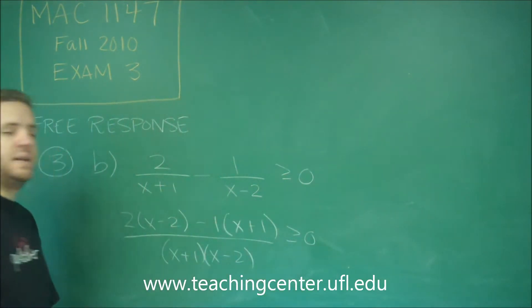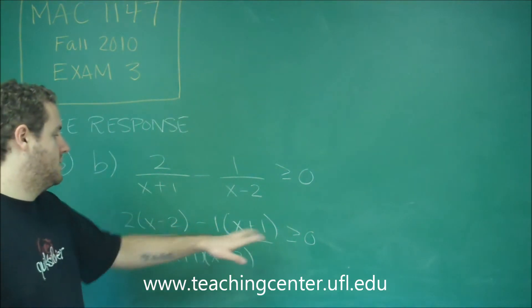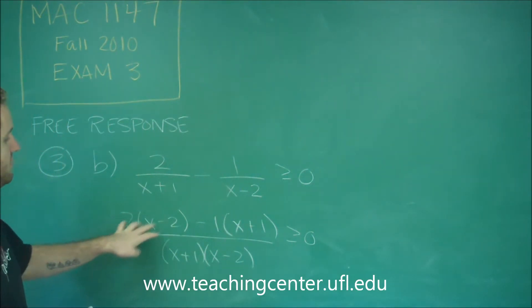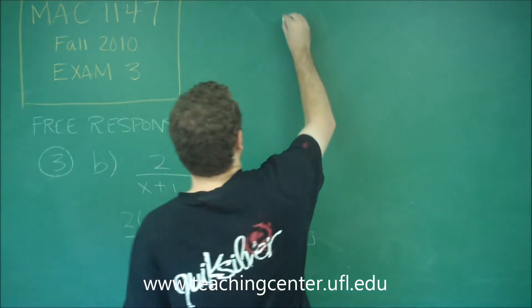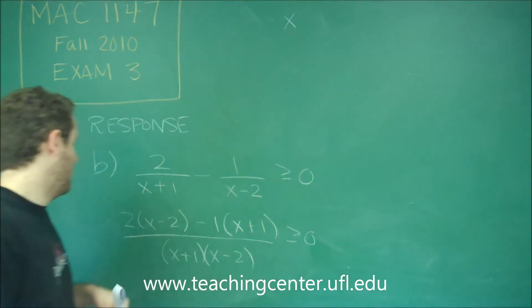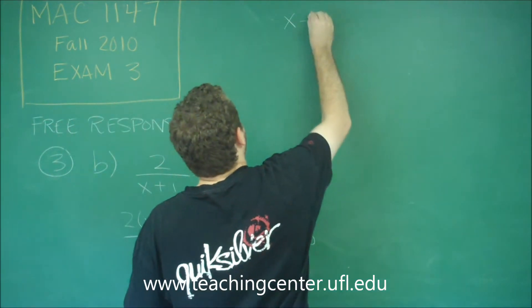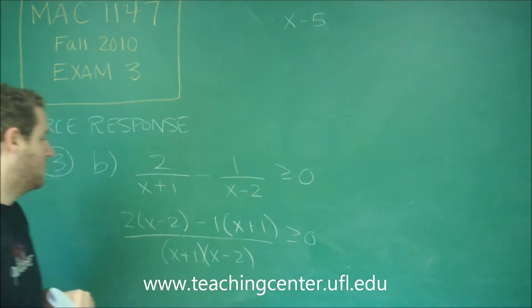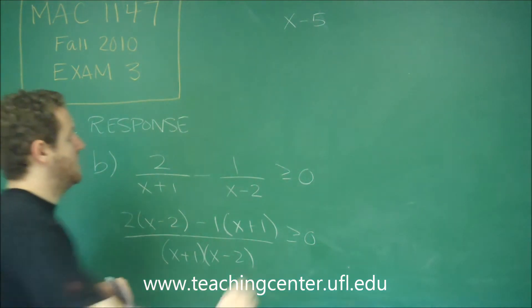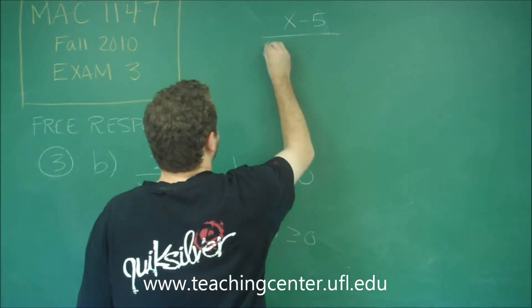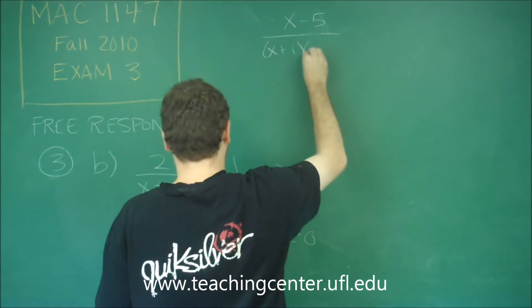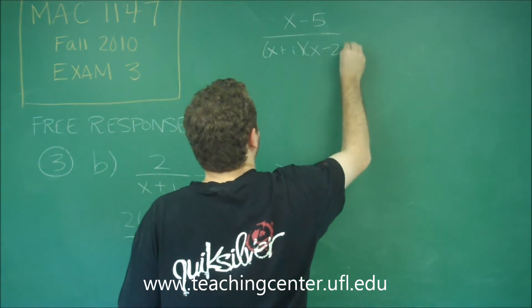So there is one more step that needs to be done before you start solving is to simplify the top. You can see on the top we have 2x minus 4 minus x minus 1. So for the x's we would have 2x minus x, so we just get x. We have minus 4 minus 1, which gives us minus 5 for the numerator. On the denominator we still have x plus 1, x minus 2.